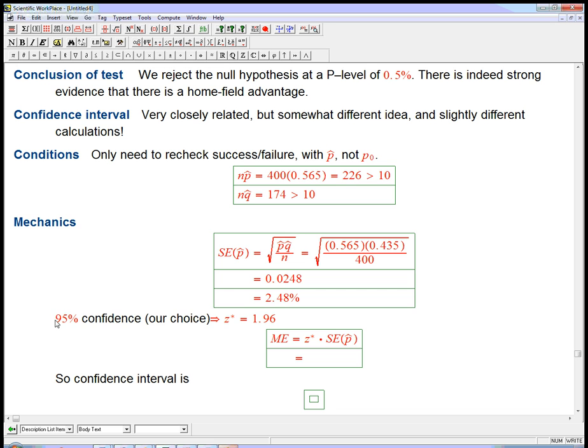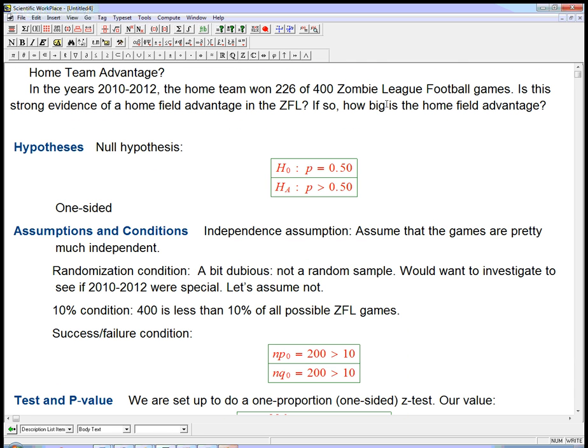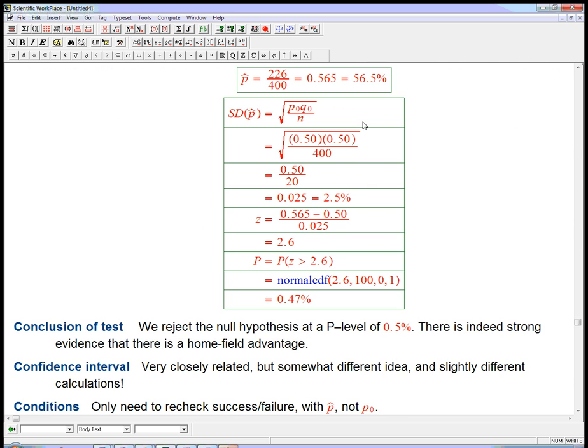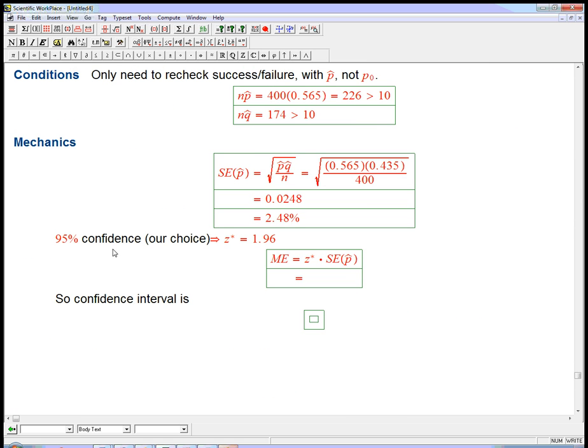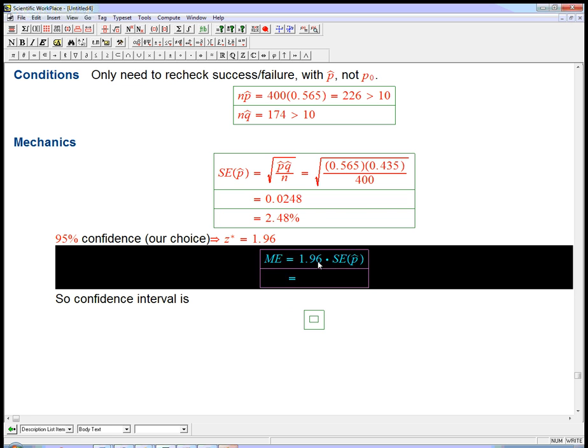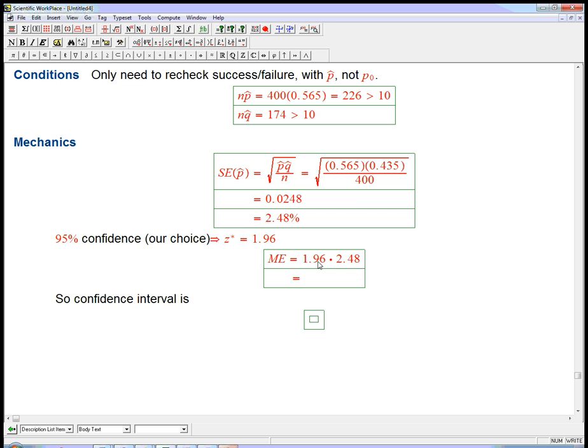There wasn't a specific confidence level required, so let's pick 95% because that's a very standard choice. We already know the z* for that is 1.96. We're going to use the standard error we got, 2.48%. The margin of error is ME = 1.96 × 2.48% ≈ 4.9%.